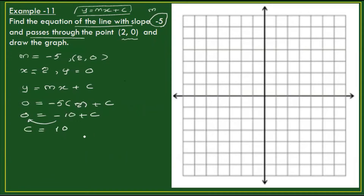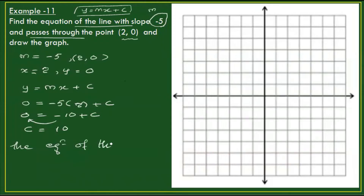So 0 equals minus 10 plus c, therefore c equals 10. That is the equation of the line.